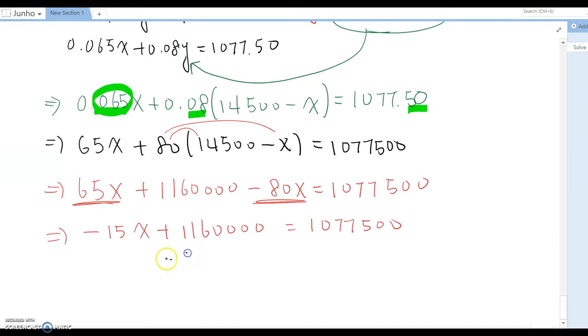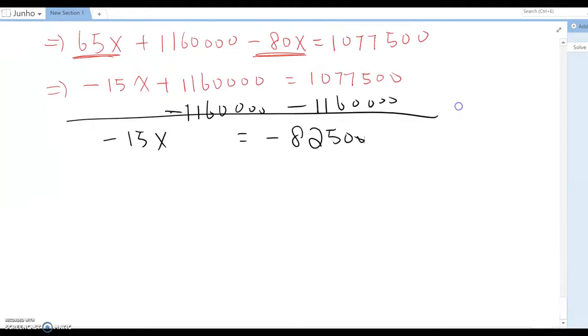So subtract 1,160,000. Then this becomes negative 15X equal to negative 82,500.